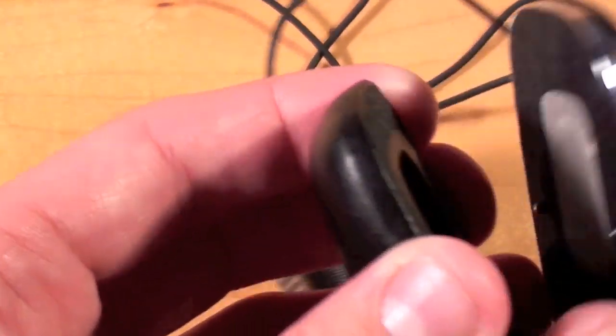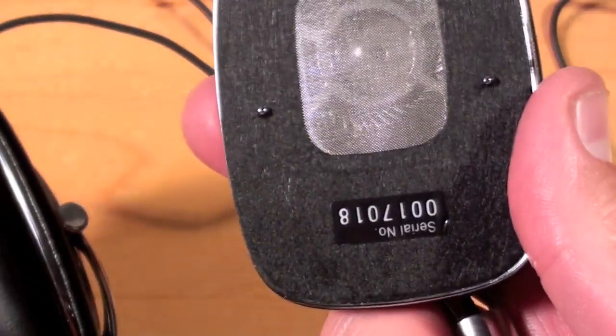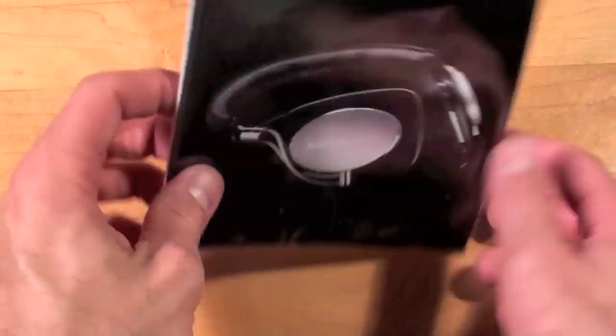Now if we look at the right ear piece, we can see that there is no wire connecting on this side, so all we have is the ear piece and the serial number. Now let's take a look at the documentation.